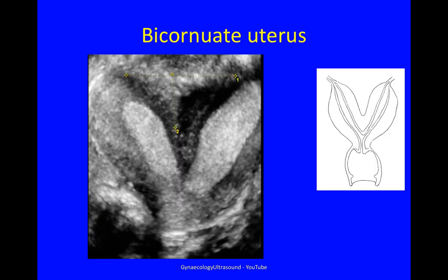This is a bicornuate uterus. Again you can see the two endometrial cavities, but now we've got a deep dip in the outer myometrial contour. This is more than 10 millimetres, confirming it is a bicornuate uterus.